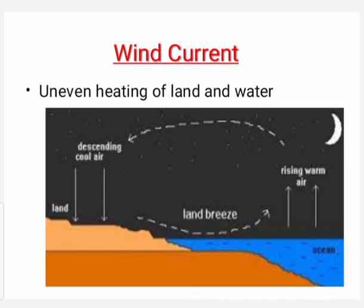Uneven heating of land and water: In summer, near the equator, the land warms up faster. The air over the land gets heated and rises, causing winds to flow from the oceans towards the land. These are called monsoon winds. The winds from the oceans carry water and bring rain.